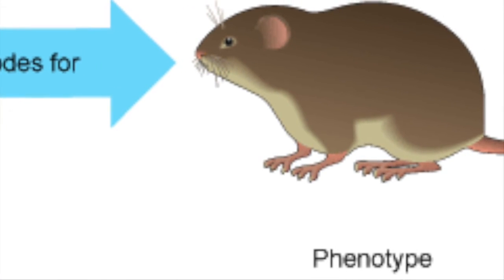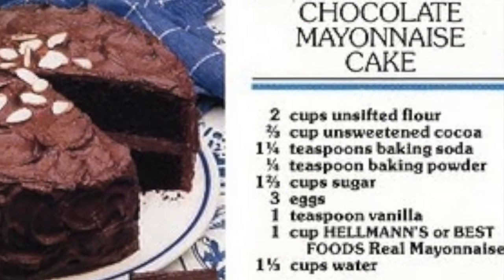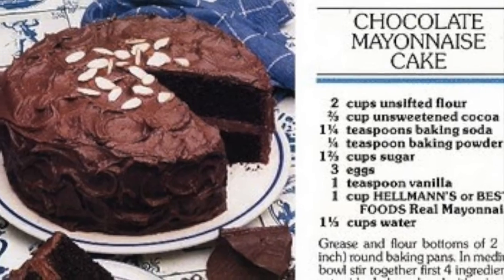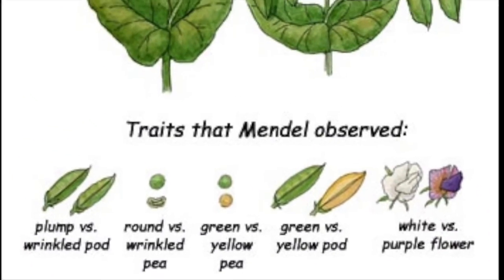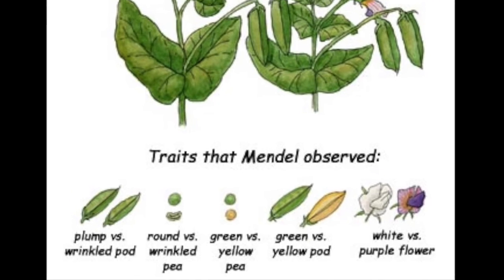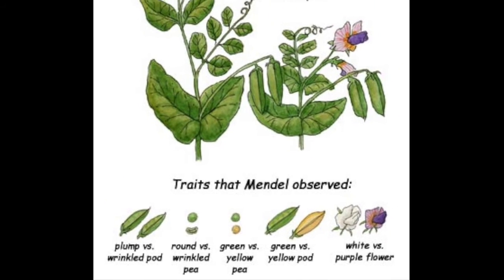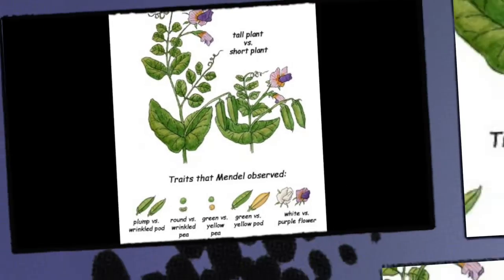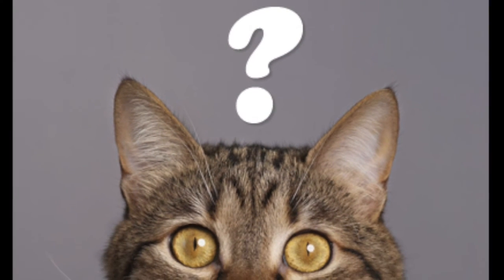Phenotype is a way to describe the traits that you can see — the physical appearance of the trait. The genotype is like a recipe for a cake, while the phenotype is like the cake made from the recipe. The genotype expresses the phenotype. For example, phenotypes of Mendel's pea plants were either tall or short, or they were purple-flowered or white-flowered.